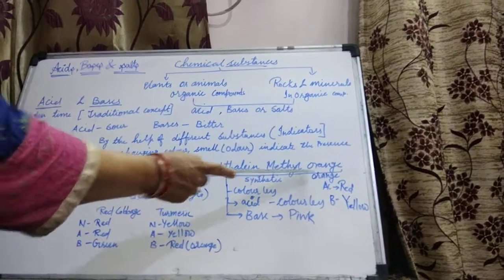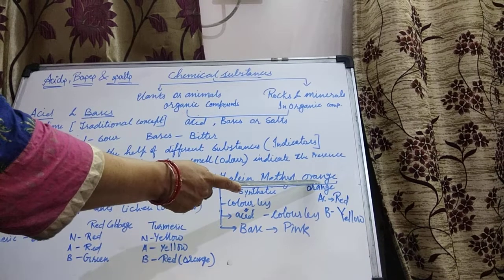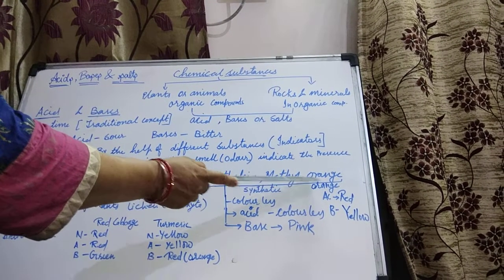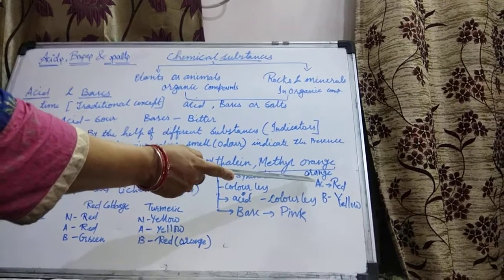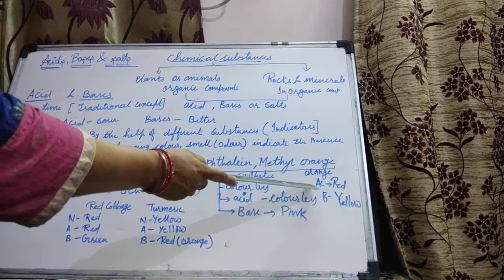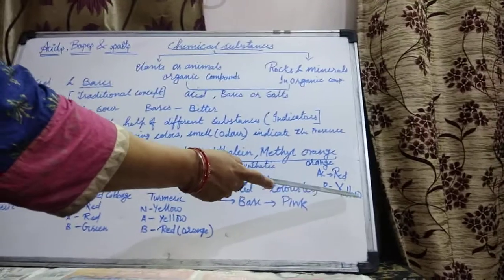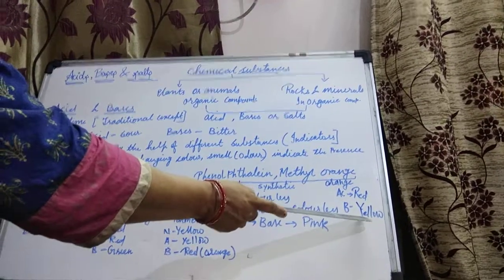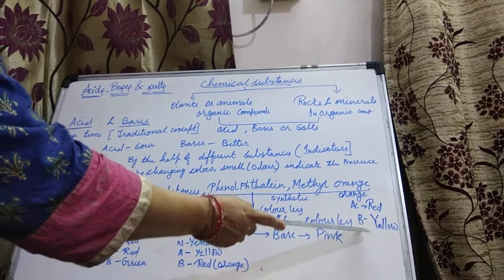Methyl orange is also a synthetic indicator which changes its color in different mediums. Its original color is orange, so in neutral medium methyl orange is orange. With acid, it gives red color, and with base, it gives yellow color. So if the orange color is changing to yellow in some substance, then that substance is regarded as a base.